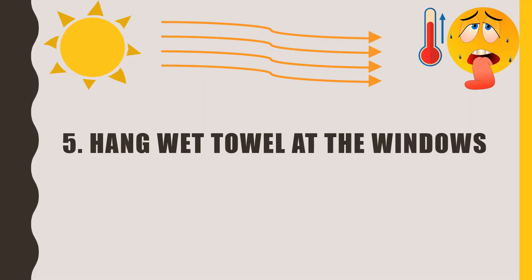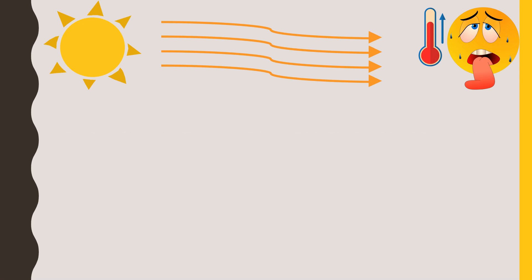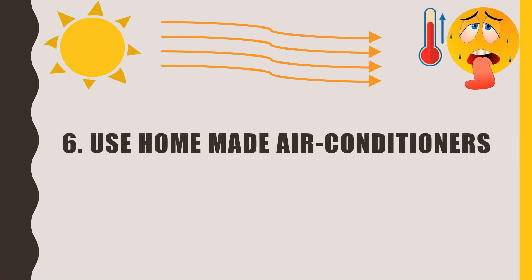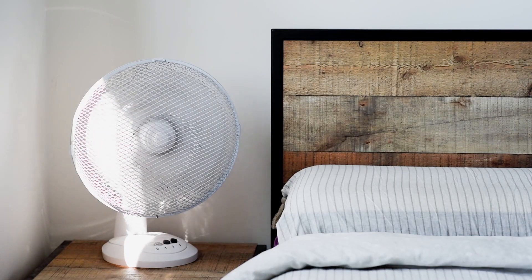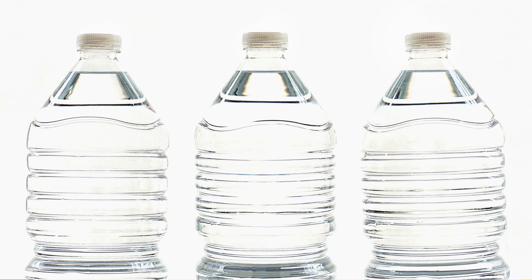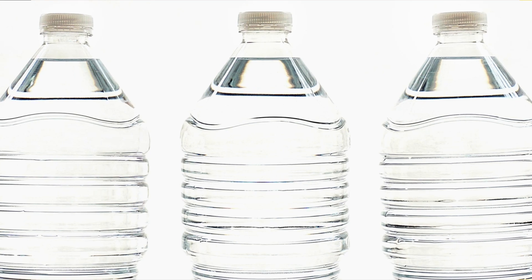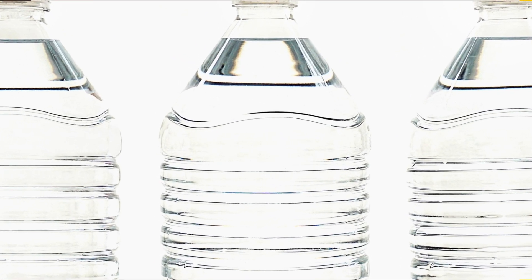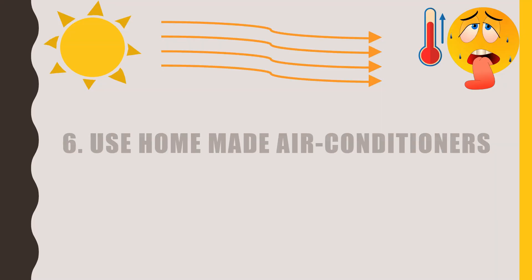Tip number six is to make a homemade air conditioner. You can convert any conventional table fan into an air conditioner — frozen water bottles can be placed in front of the fan to circulate chilled air all around you. Make two sets of frozen bottles and change them every three hours. In this way, you can make an economical air conditioner at home.